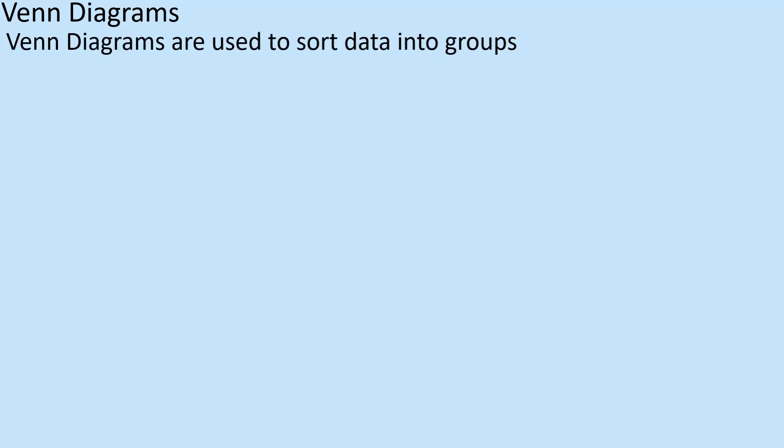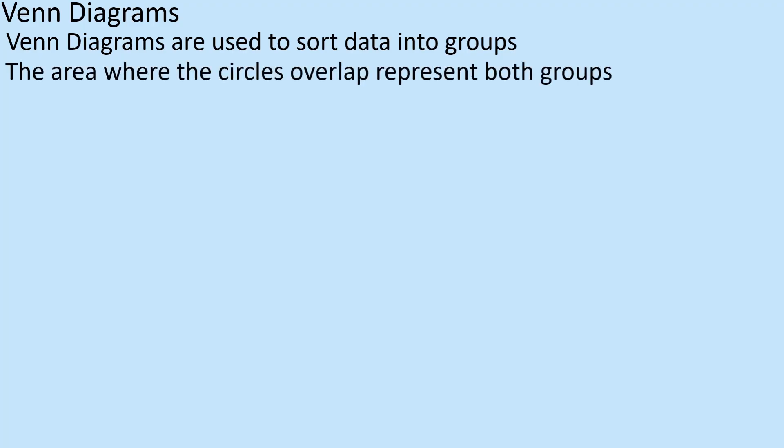Hi there everybody, so today we're going to look at Venn diagrams — how they look, the notations and all those kind of things, and how to sort data into those typical groups. So a Venn diagram is literally a bunch of circles where overlaps represent both groups.